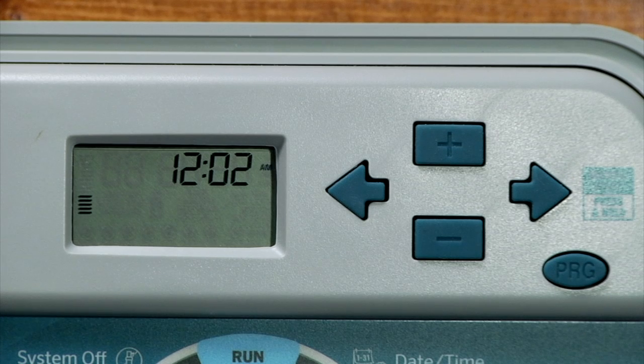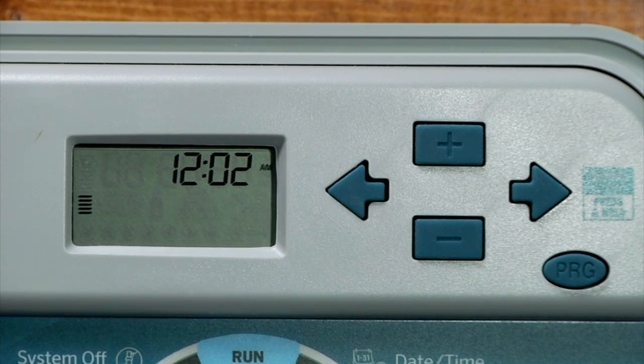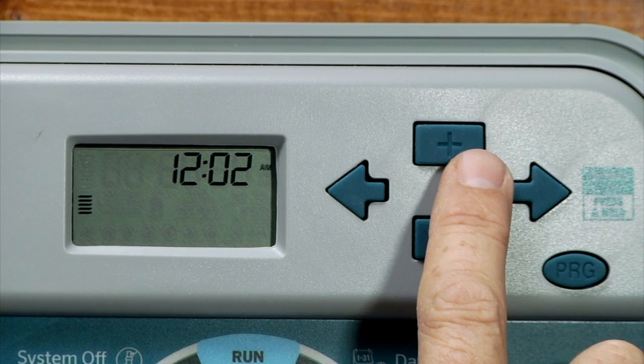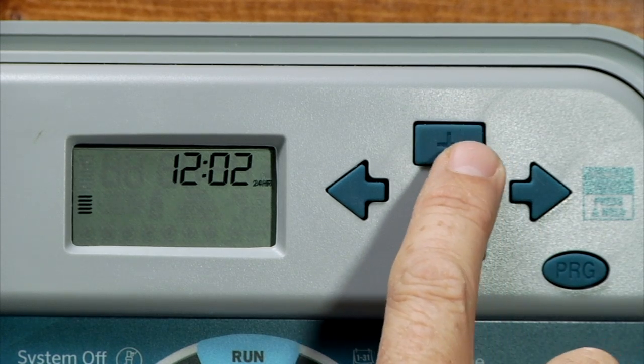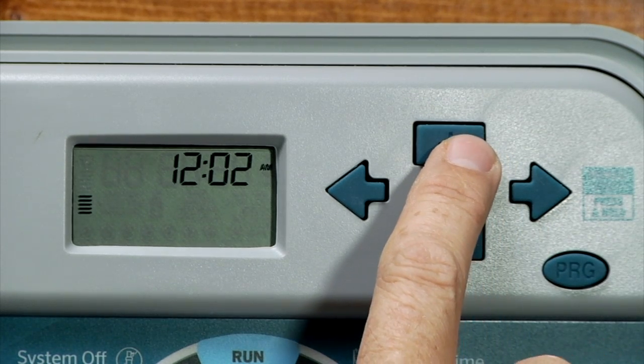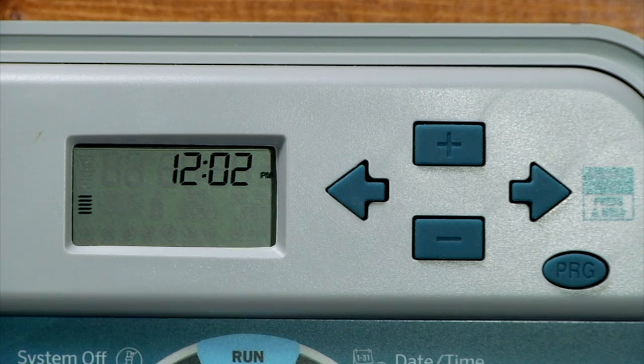We'll use the right arrow, and it goes to the AM, PM, and 24-hour function there on the side of the screen. We can use the plus or the minus to go through the three selections: AM, PM, or 24-hour mode. In this case, we'll stay on PM.